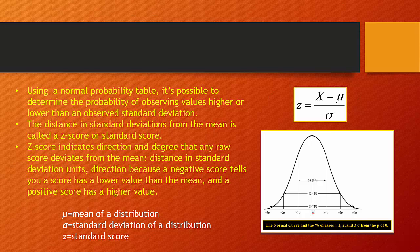The distance in standard deviation units away from the mean is what's called a z-score or a standard score, and it indicates both the direction and the degree to which any raw score deviates from the mean — it's distance in standard deviation units. A negative value means we've observed an observation below our mean, and a positive value means the observation is above our mean. We can use the formula z equals x minus mu over sigma as a generalized form, where mu is the mean of the theoretical distribution, sigma is the standard deviation, and z is the standard score.